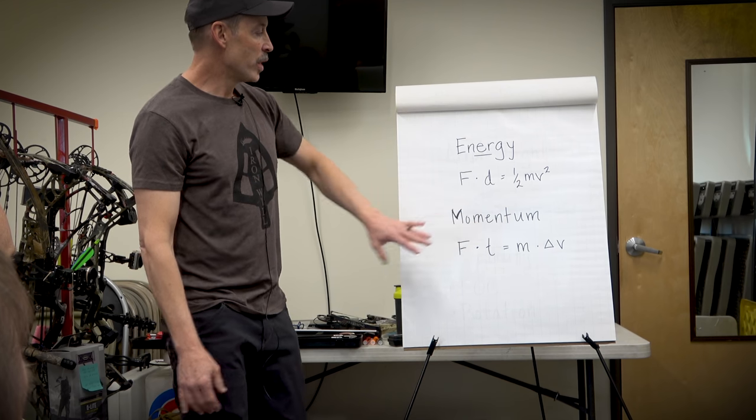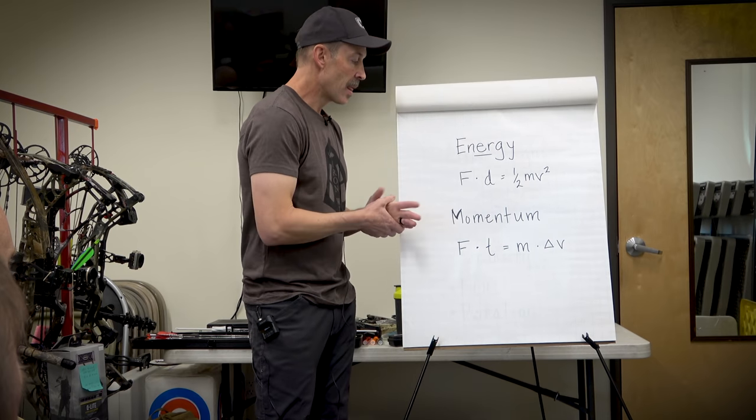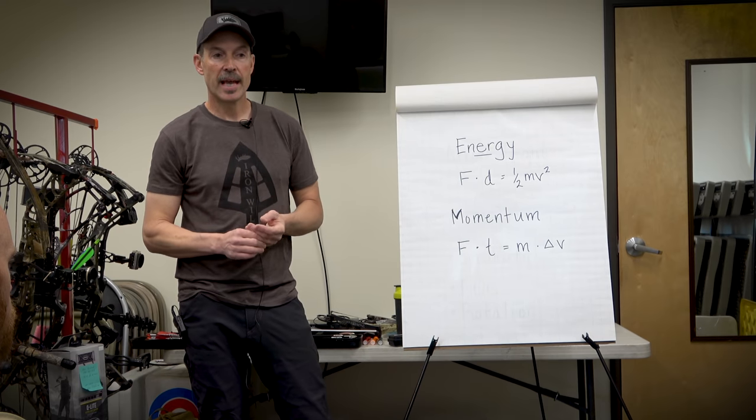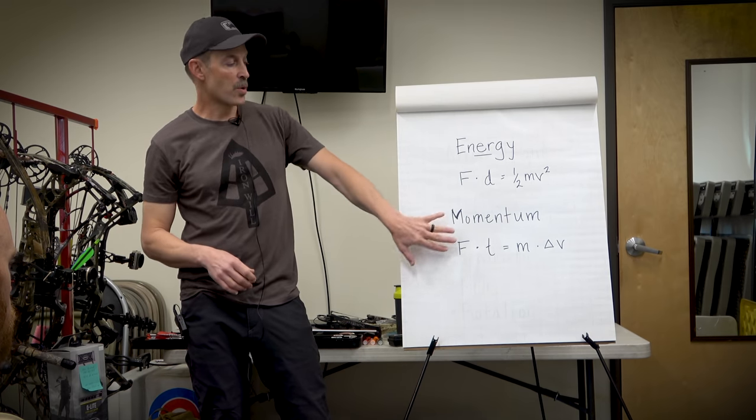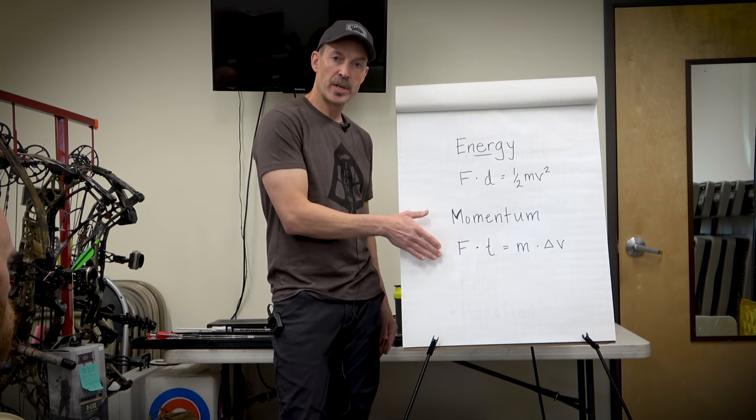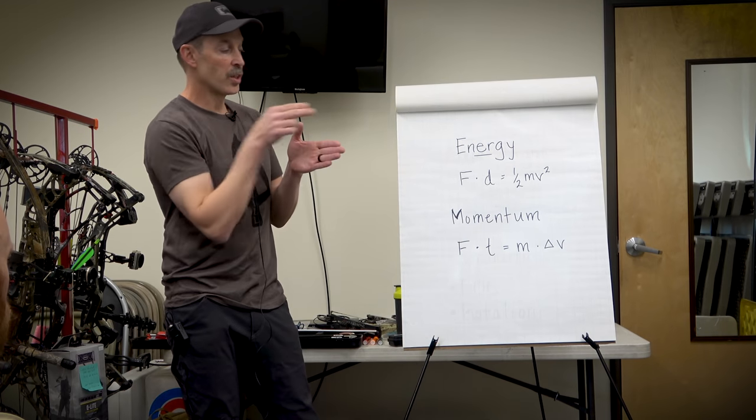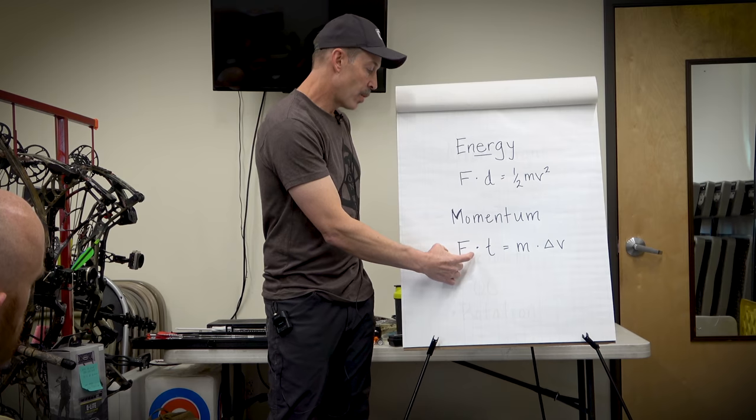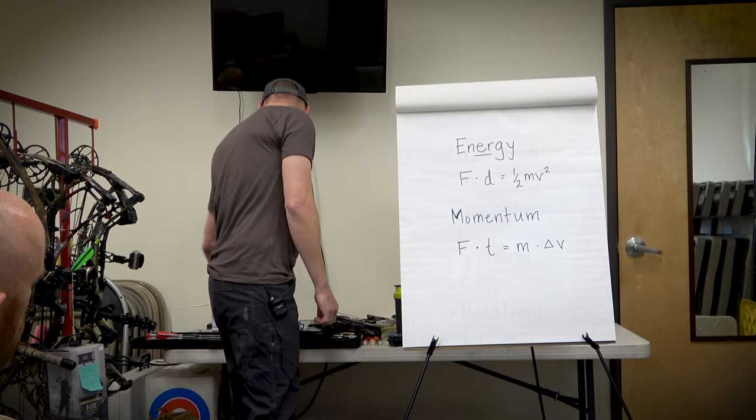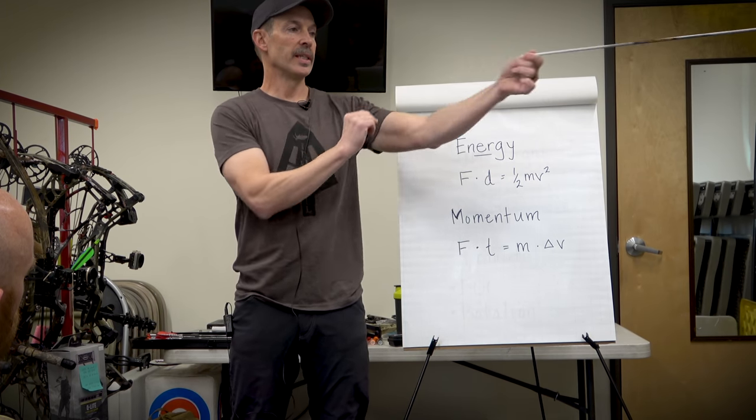We talked about energy momentum, and really you can't have momentum without energy. They really kind of go hand in hand. The good thing about momentum is it's a vector quantity. So that means it has a direction. So it's a more direct way of thinking about what's happening and how much penetration you're getting. It means it's in a straight line. At your bow, you have this force over time. It's just pushing your arrow and then releasing it.